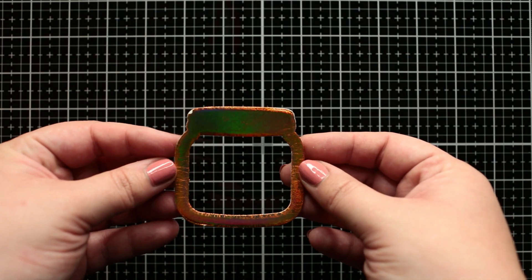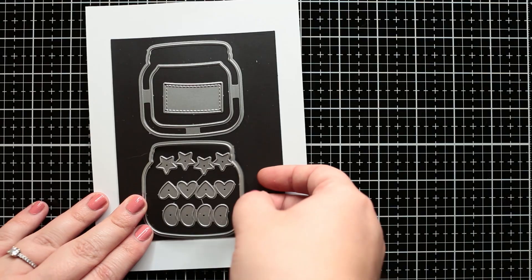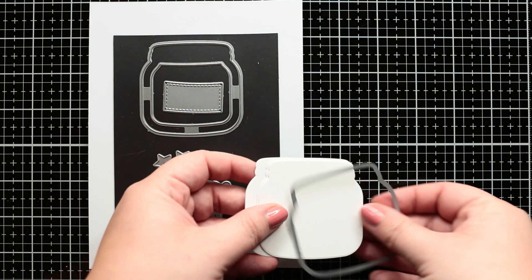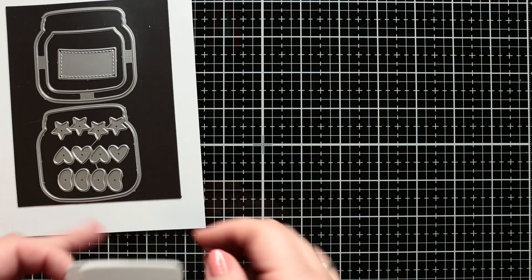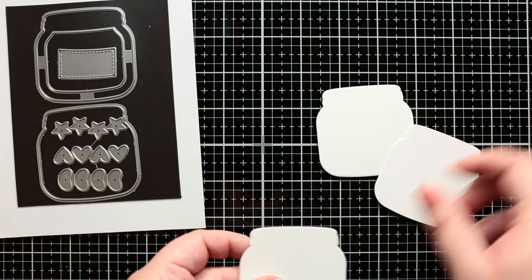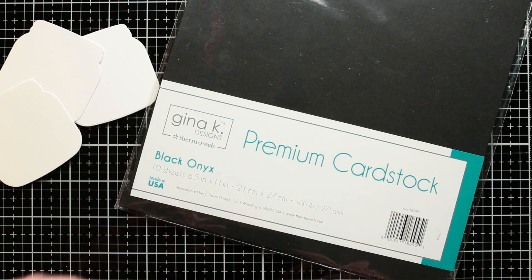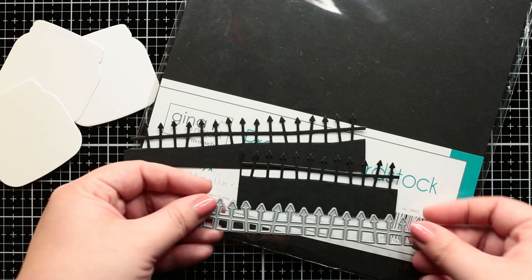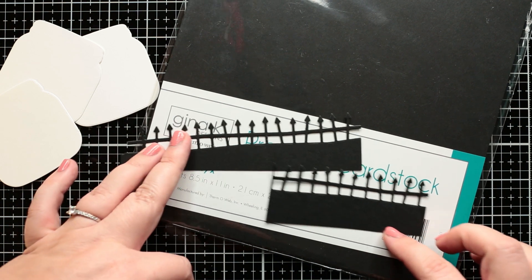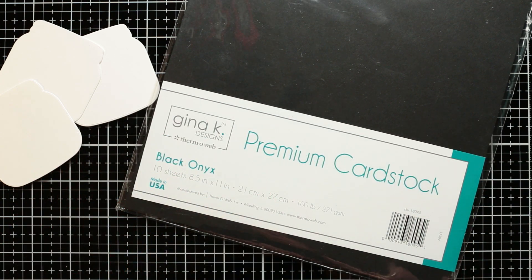When the frames were done I continued with die cutting. This time I run the cardstock die cut from the Have You Been add-on die set through my die cut machine with the same white cardstock. Then I created a black fence with black onyx cardstock and spooky fence border dies by Lawn Fawn.